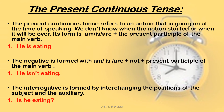The present continuous tense refers to an action that is going on — it is the continuing tense — happening at the time of speaking. We don't know when the action started or when it will be over. Its form is am/is/are plus the present participle of the main verb. For example: He is eating. We use 'is' according to the subject 'he', and 'eating' is the present participle of the main verb, showing a continuous action.